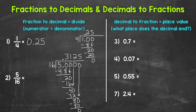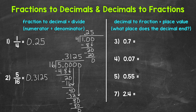So 5 sixteenths equals 0.3125 — 3,125 ten-thousandths. Now, before we move on, I want to mention what happens if we don't get to that clean cut zero — if the decimal keeps going. In that case, we need to round. For example, go to the ten-thousandths place and round to the thousandths, or go to the thousandths place and round to the hundredths. Do whatever works best for you.